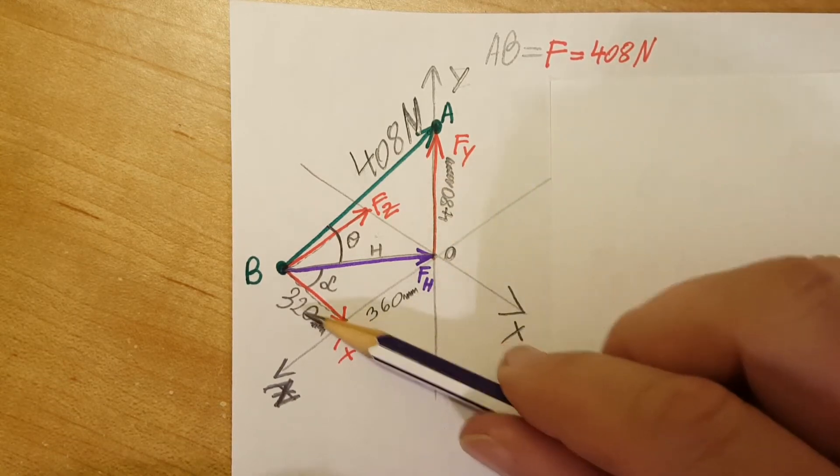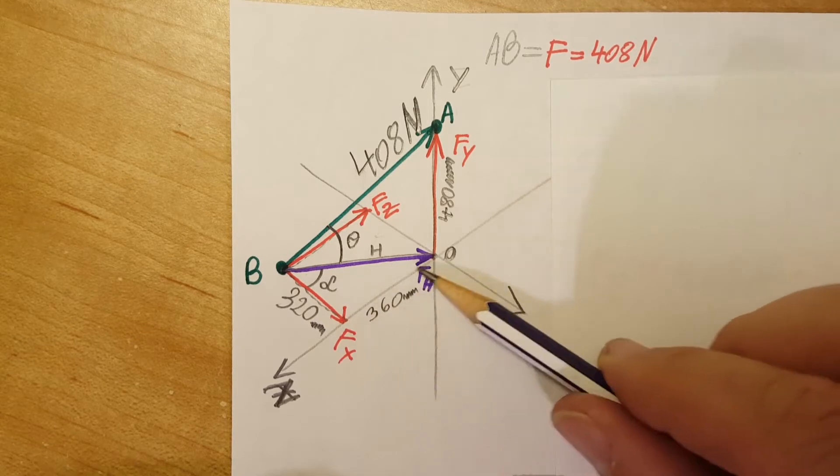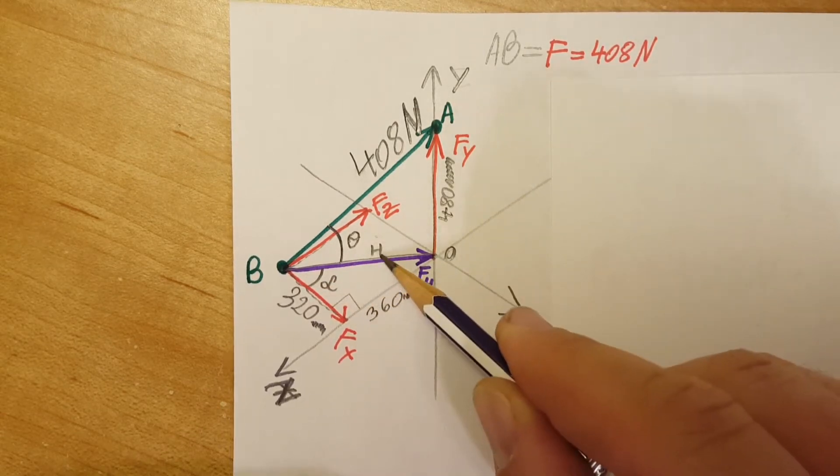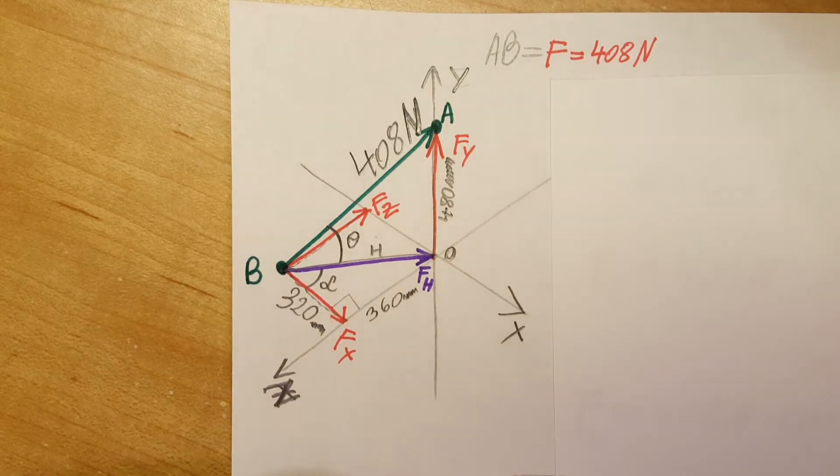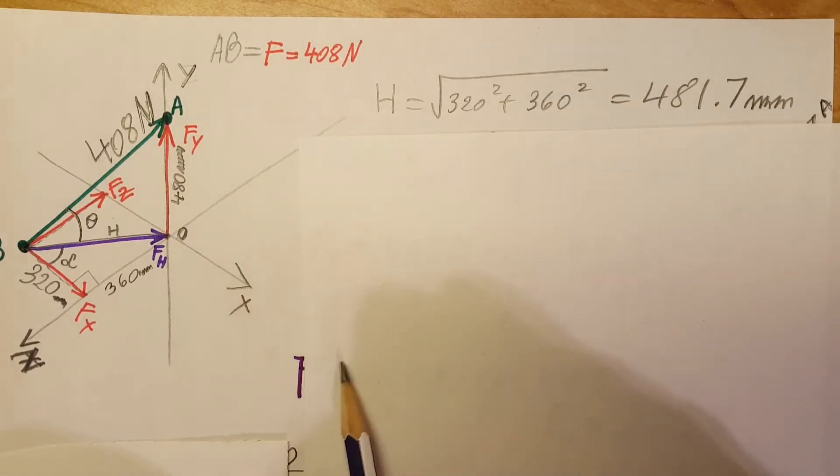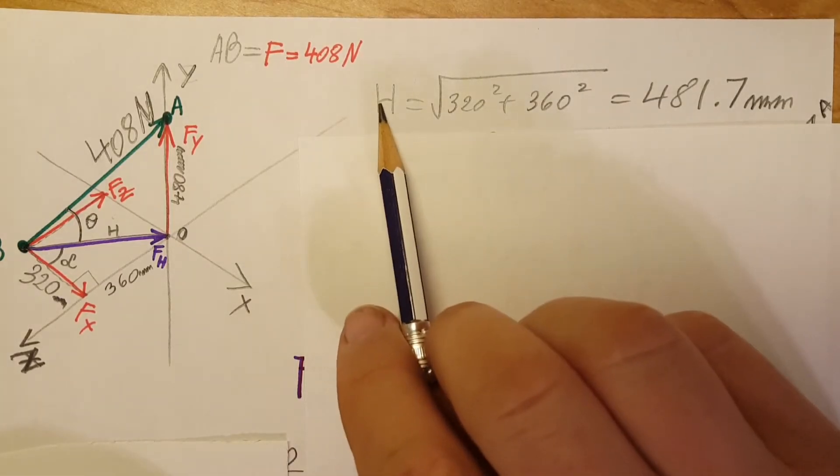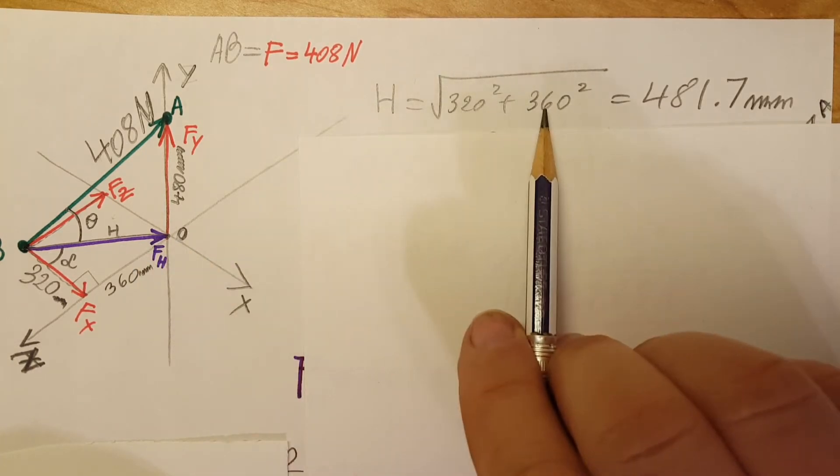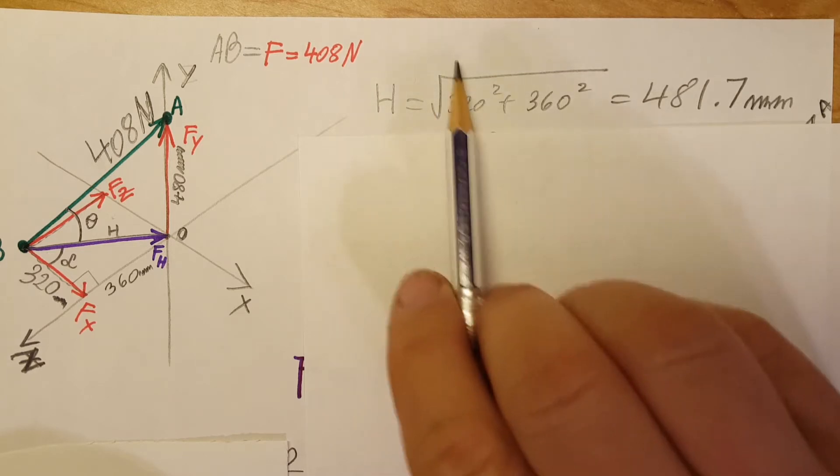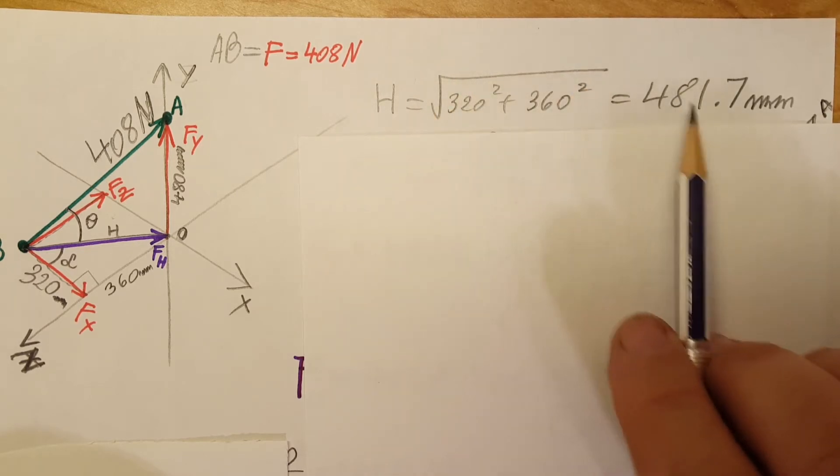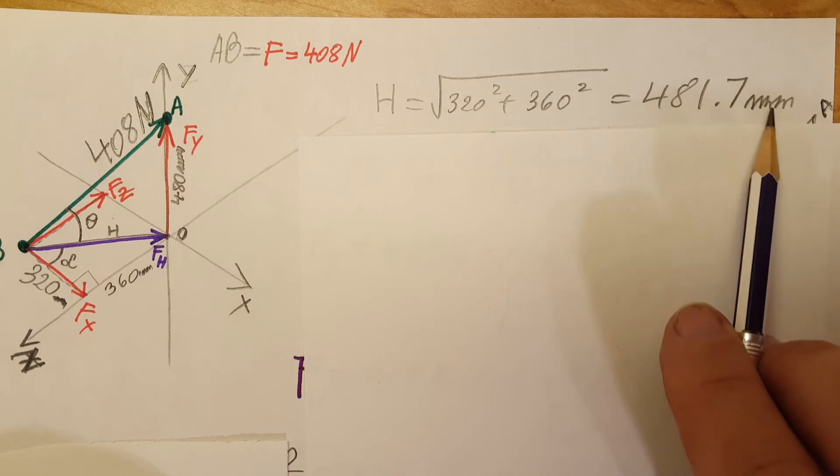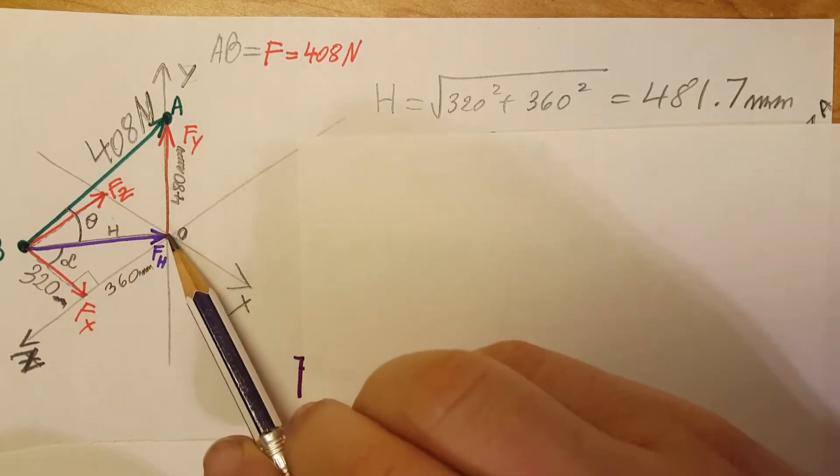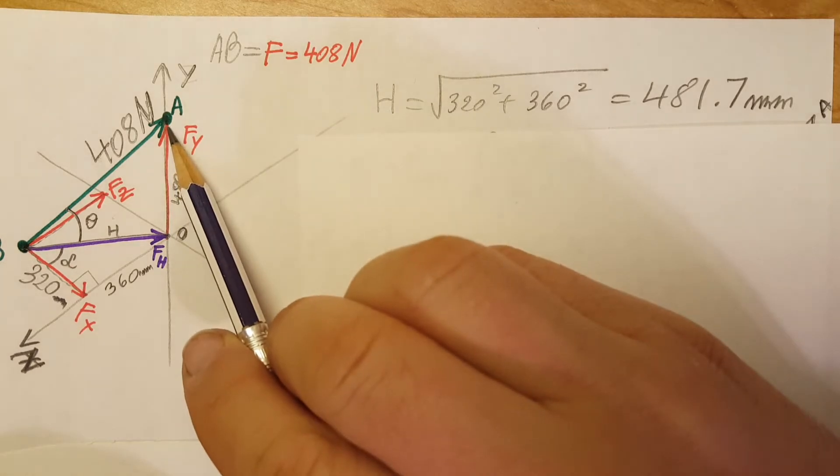So from these two in this triangle, this is a right triangle here, we can find H with the Pythagorean rule. We can see that H is the hypotenuse, so 320 squared plus 360 squared, the whole thing square rooted, equals 481.7 millimeters. Now we have this distance and we have this distance going up here.